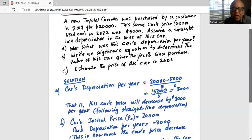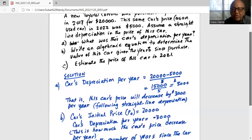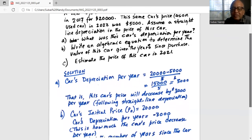Now we are going to write an algebraic equation to determine the value of this car given the years since purchase. Car's initial purchase price is $20,000. Car's depreciation per year is minus $3,000. This is how much the car's price decreases per year.